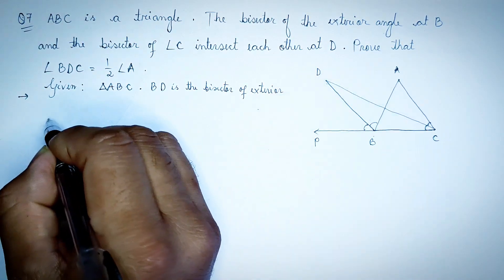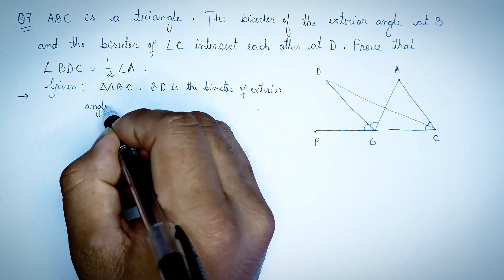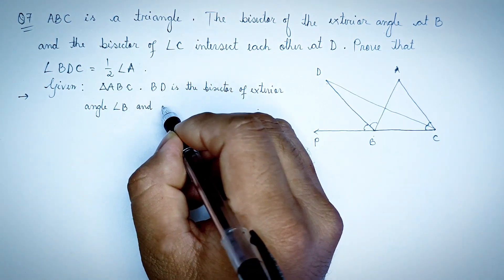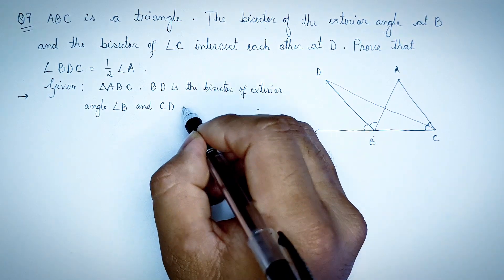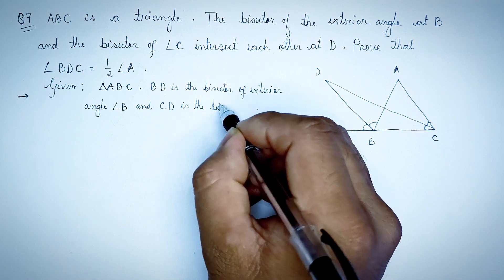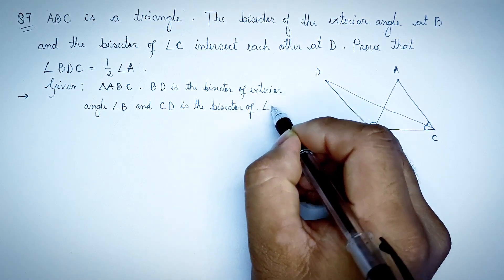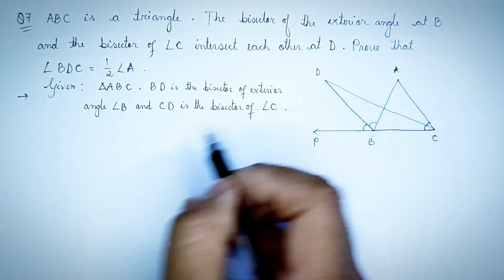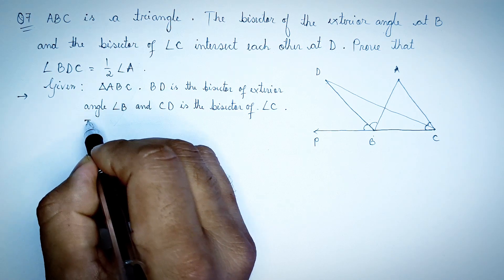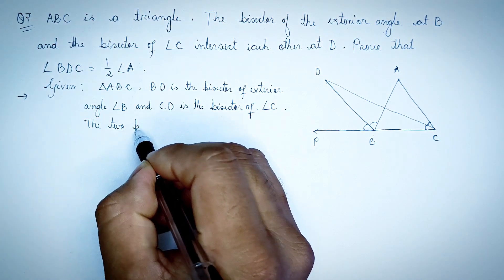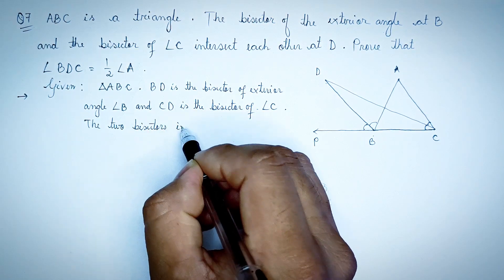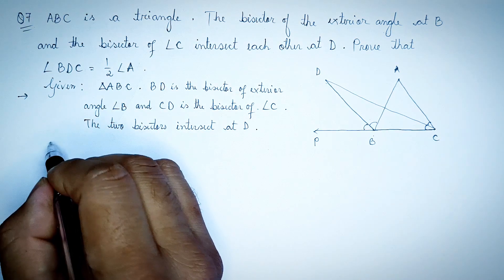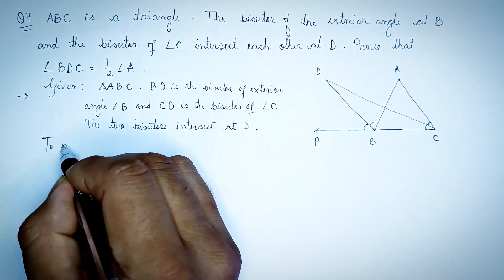CD is the bisector of the exterior angle C, and the bisector intersects at point D.